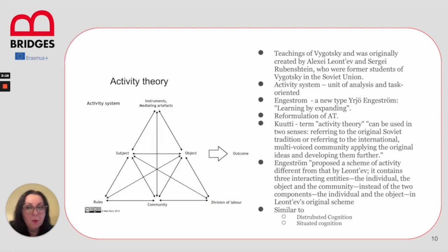Engeström proposed a scheme of activity that is different from Leontiev's and contains three interactive entities: the individual, the object, and the community, instead of the two components that were introduced in Leontiev's original scheme.